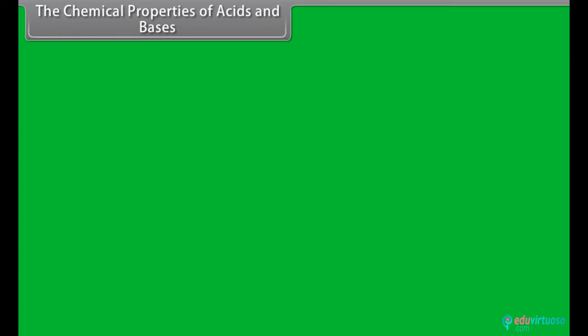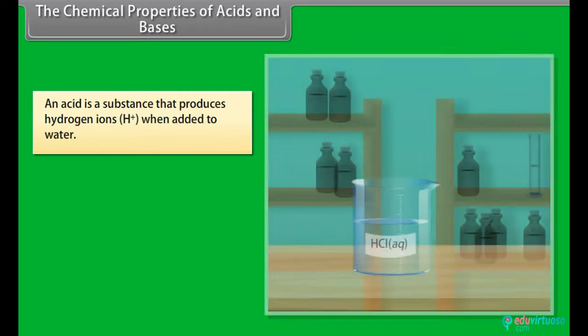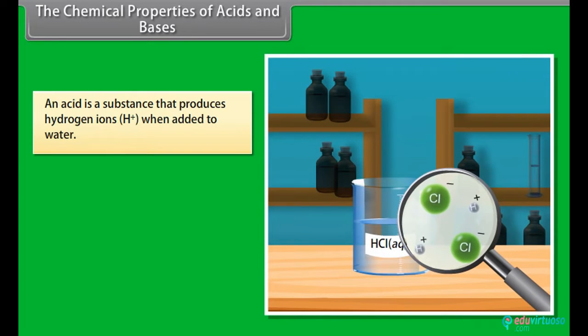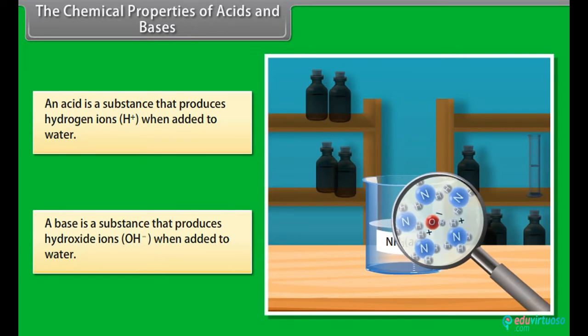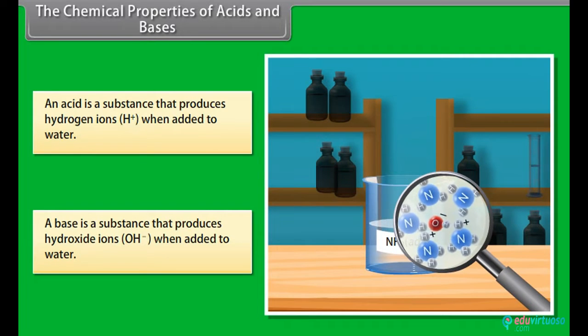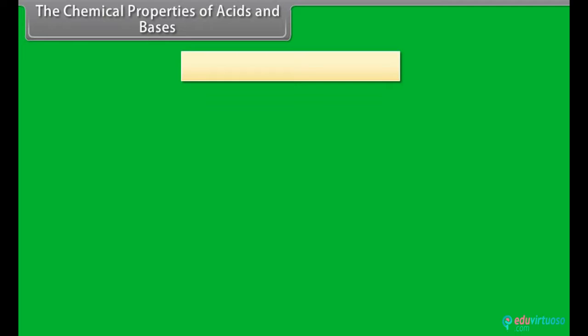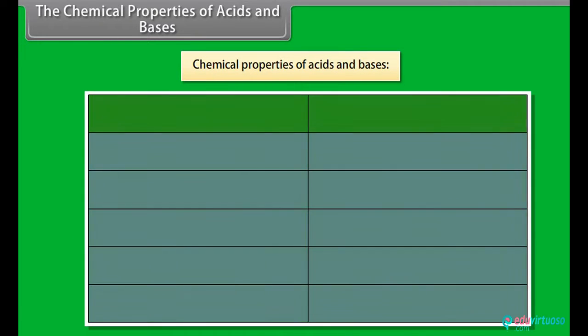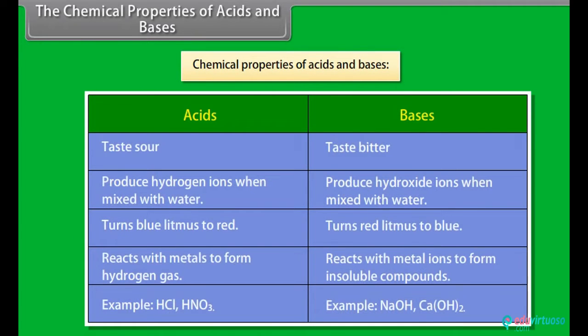The chemical properties of acids and bases. An acid is a substance that produces hydrogen ions when added to water, whereas a base is a substance that produces hydroxide ions when added to water. Both acids and bases have different chemical properties.